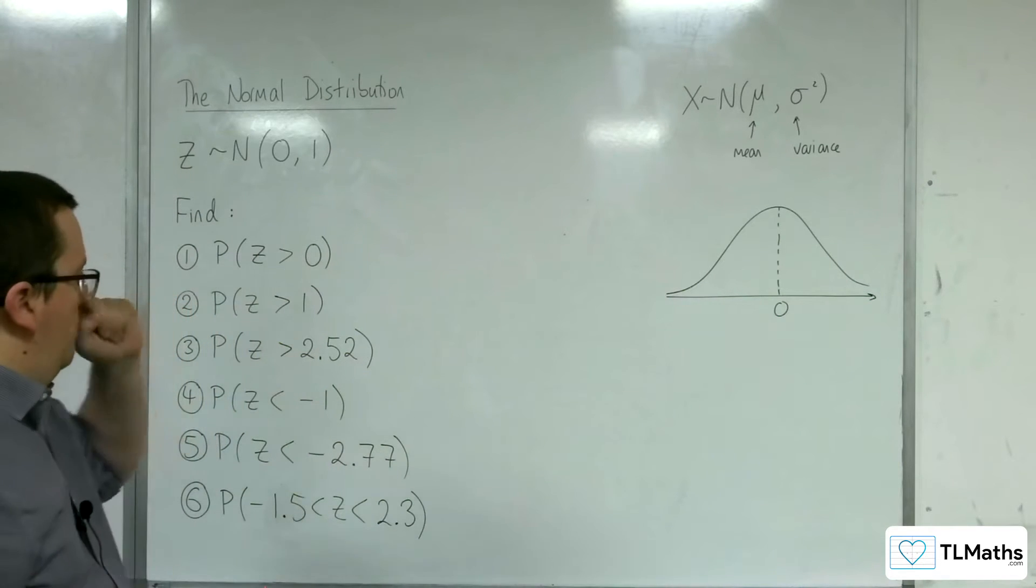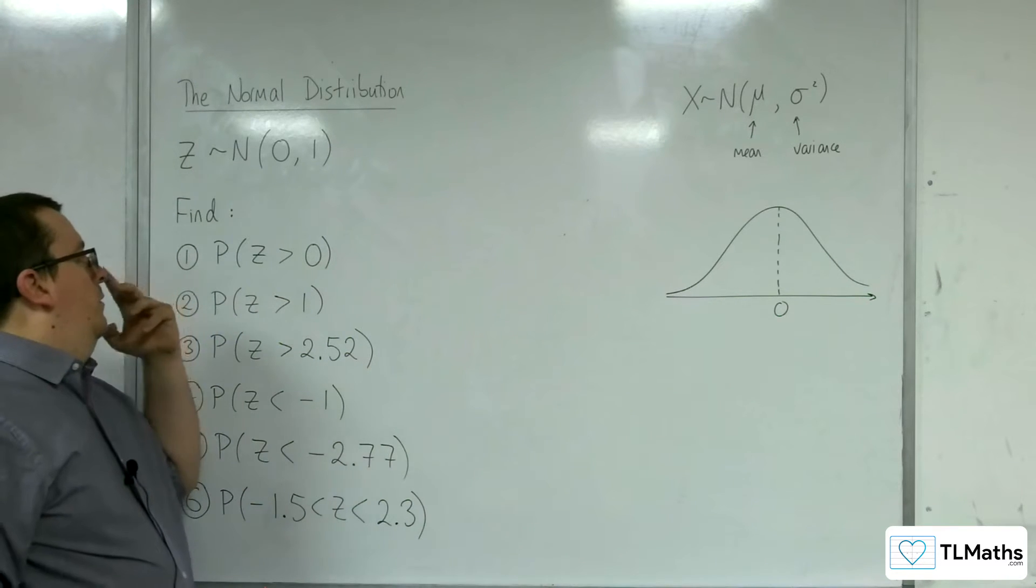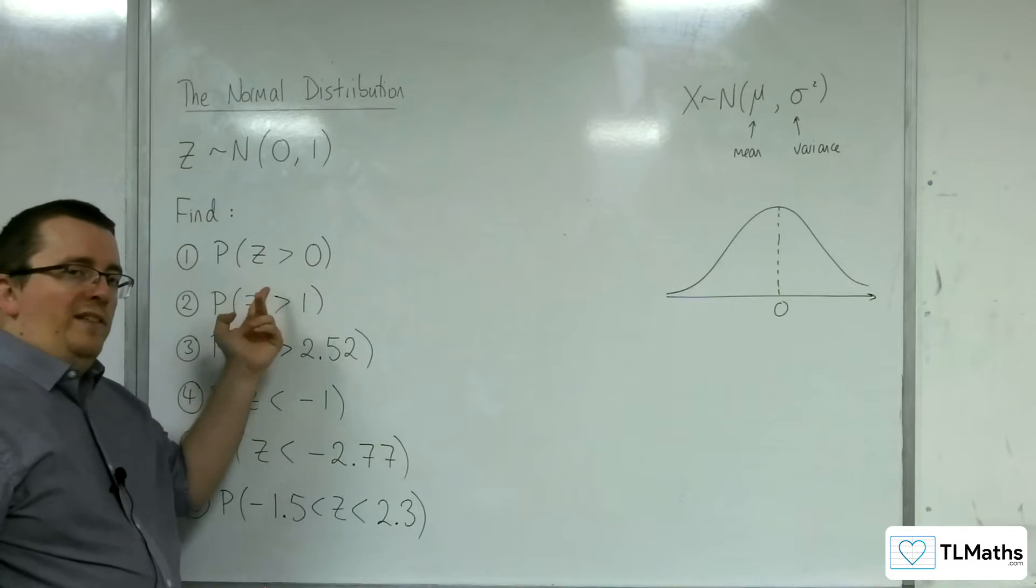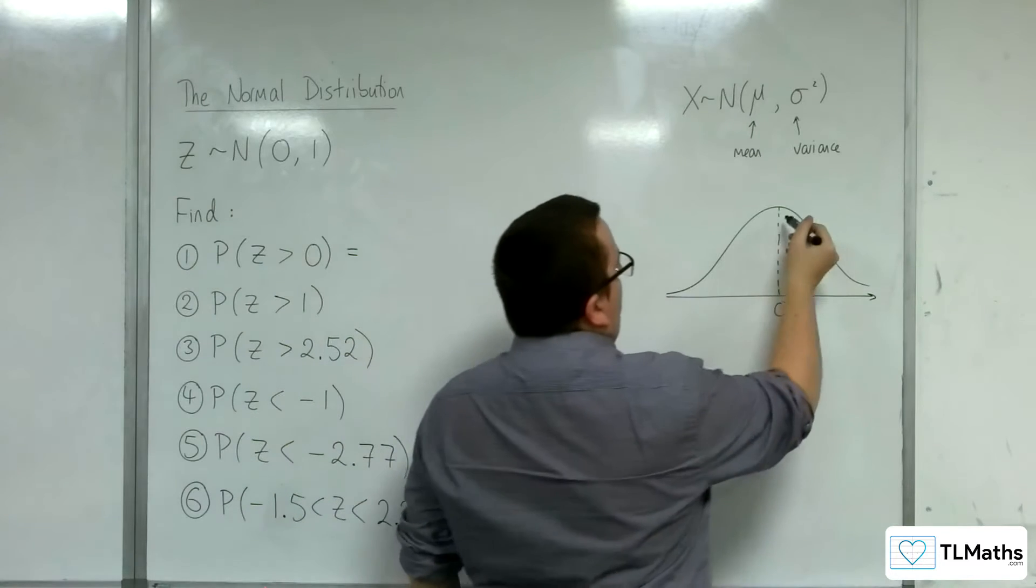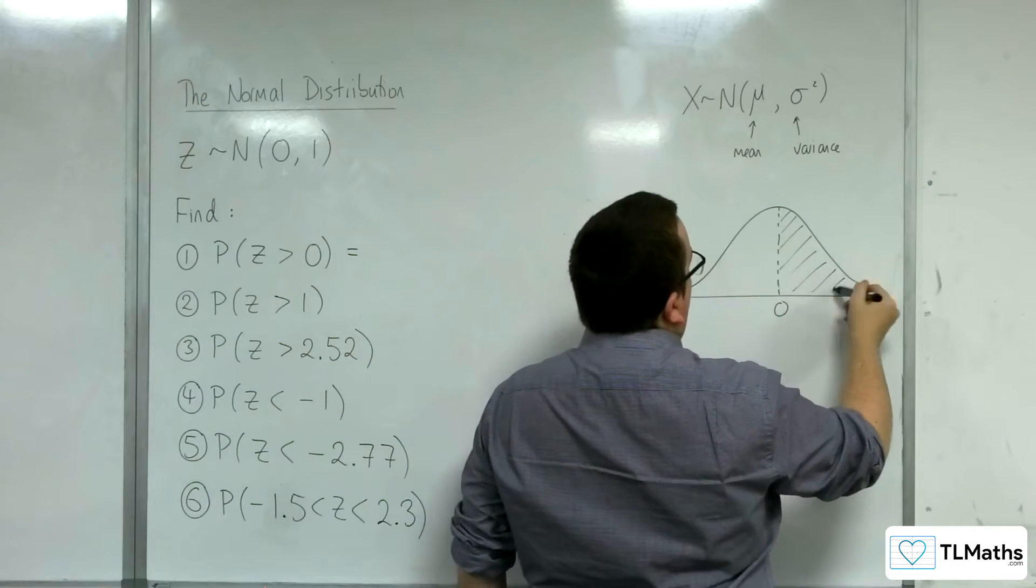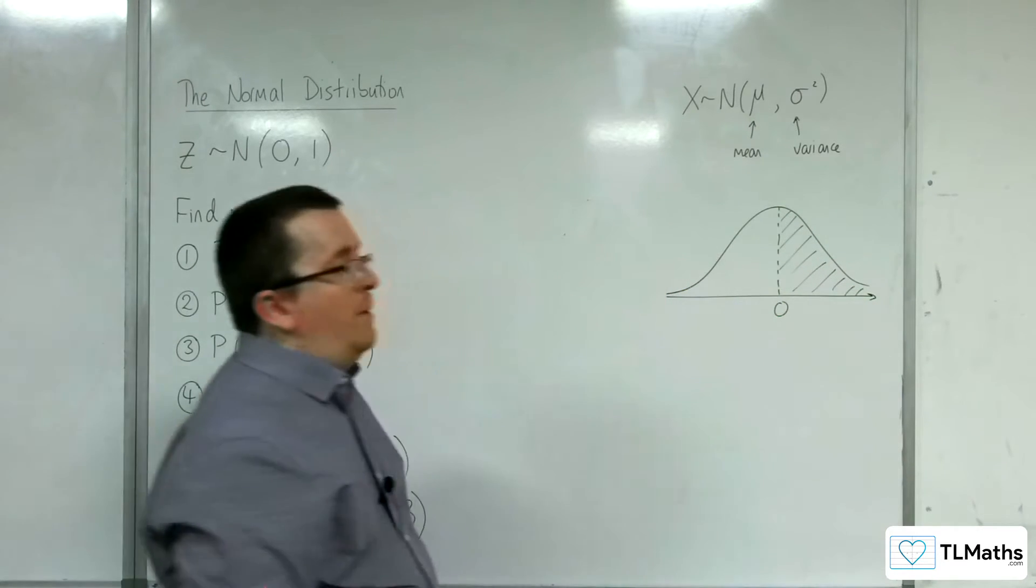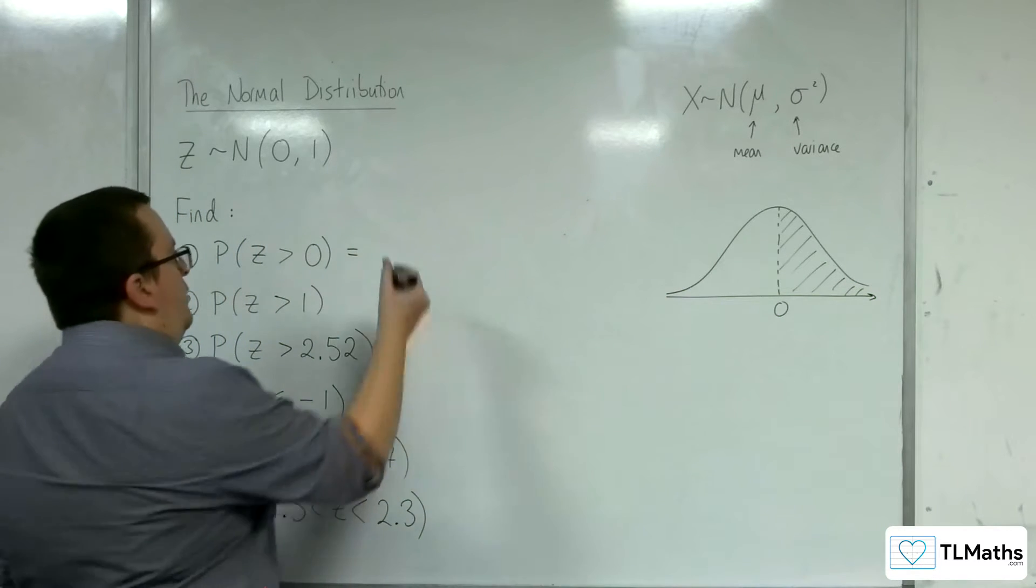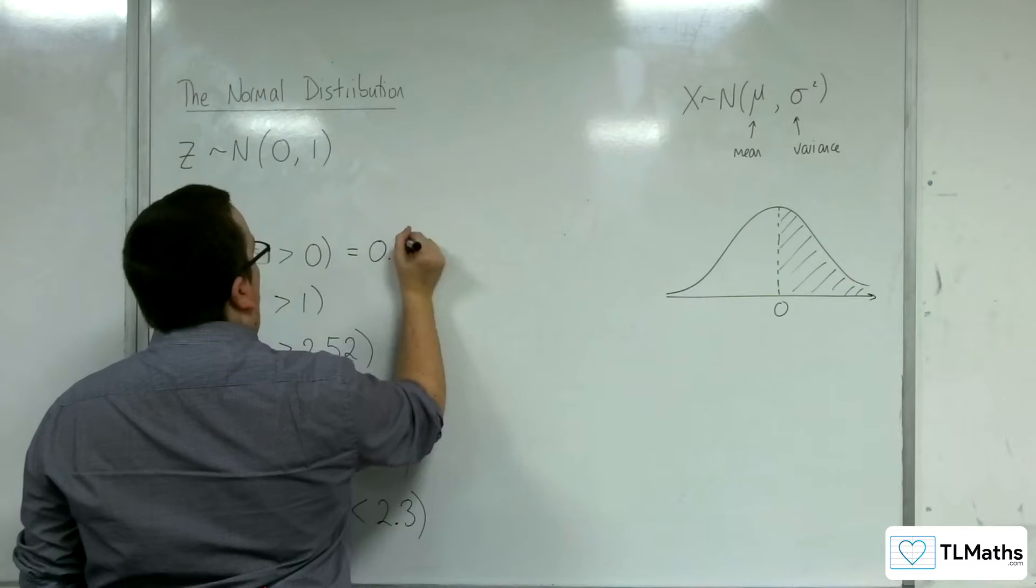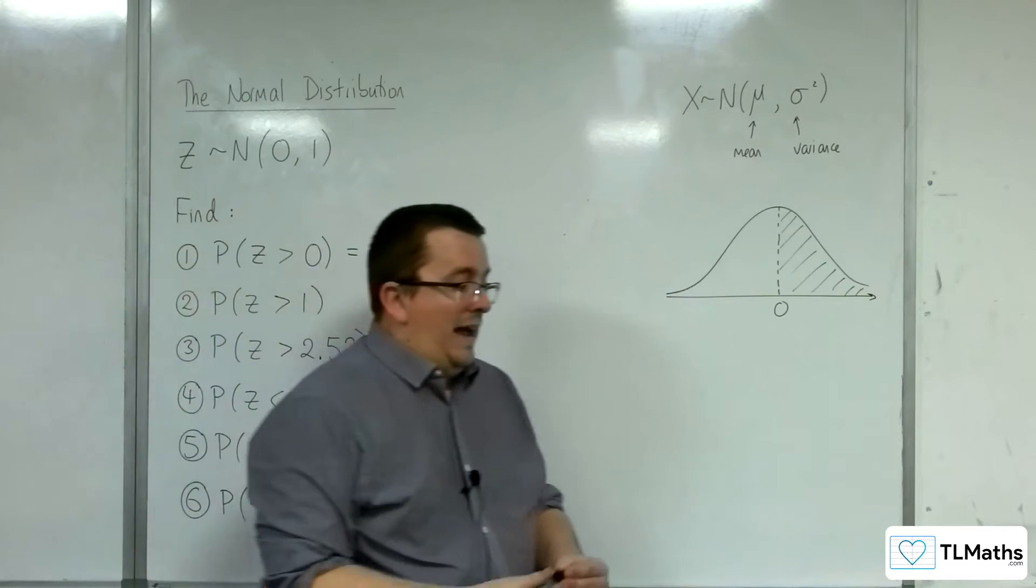So the mean being at zero. Now question number one, I don't really need to calculate it. What's the probability of Z being greater than zero? Well, it's this region here. How much of the diagram have I shaded? Well, half of it. So this probability is 0.5, as I would expect.